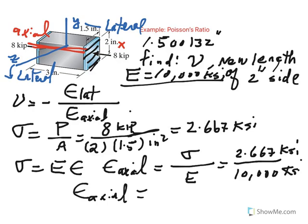By the way, I'm going to call this negative since it's a compressive stress, would be negative 0.0002667. And as you know, epsilon is dimensionless. So, we got the axial strain.